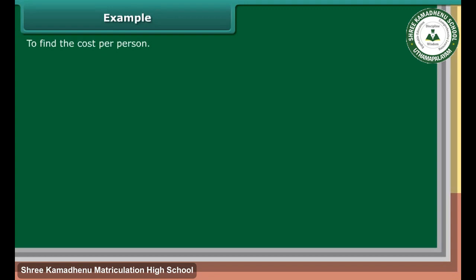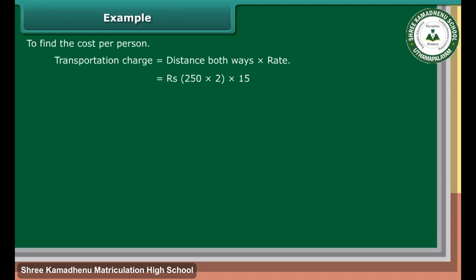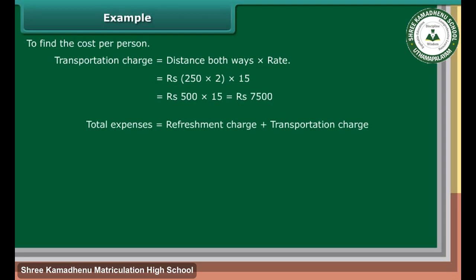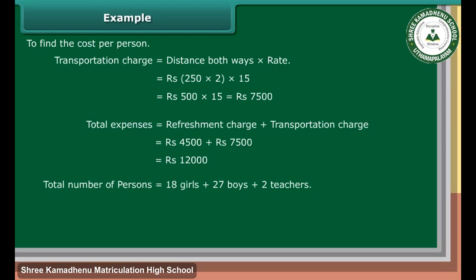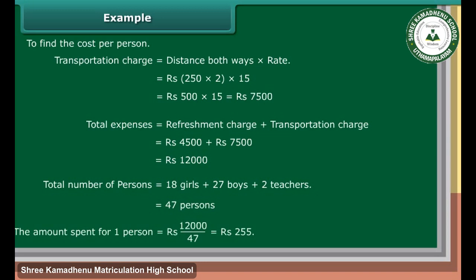To find the cost per person: Transportation charge is equal to distance both ways into rate, which is equal to Rs. 250 into 2 into 15, which equals Rs. 7,500. Total expenses is equal to refreshment charge plus transportation charge: Rs. 4,500 plus Rs. 7,500, which is equal to Rs. 12,000. Total number of persons is equal to 18 girls plus 27 boys plus 2 teachers, which is equal to 47 persons. The amount spent for one person is equal to Rs. 12,000 upon 47, which is equal to Rs. 255.